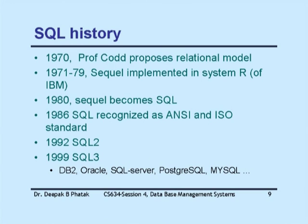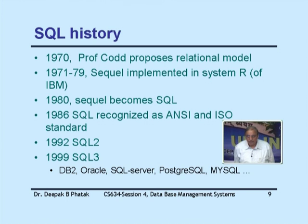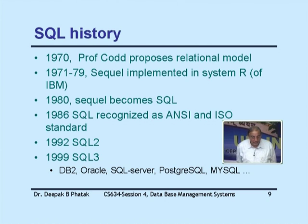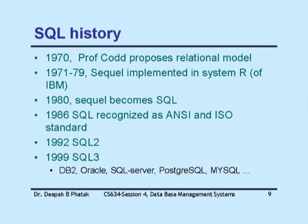SQL history: In 1970 Professor Codd proposed the model. From 1971 to 1979 SQL was implemented in System R at IBM. In 1980 SQL became SEQUEL, still pronounced SQL by many. In 1986 SQL was recognized as ANSI and ISO standard. In 1992 SQL 2 came out. In 1999 SQL 3 came out, which is the current standard. DB2, Oracle, and SQL Server are commercial products. PostgreSQL and MySQL are open source databases that compete well with commercial databases in many applications.